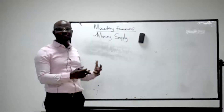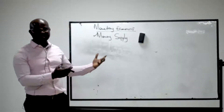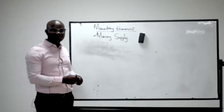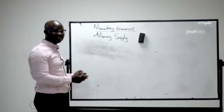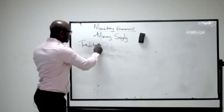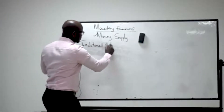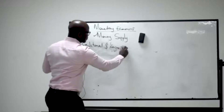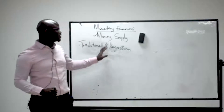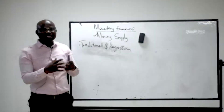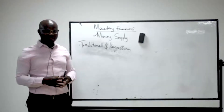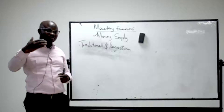There are three schools of thought that try to explain the measurement of money supply. The most common is the traditional and Keynesian field, which defines money supply as the currency in the hands of the public plus the demand deposit.